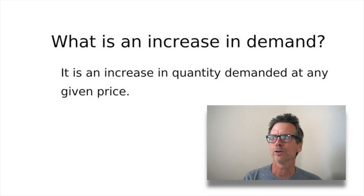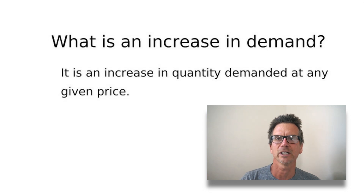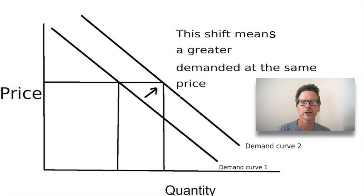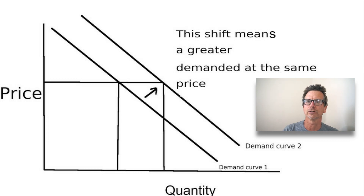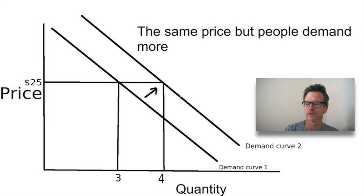An increase in demand is an increase in quantity demanded at any given price — this is a shift. It's not to be confused with the movement along the demand curve, which is a different topic. When a curve shifts, it shifts to the right or to the left. A shift means a greater demand at the same price — the price stays the same, but for some reason people start demanding more of a particular product.